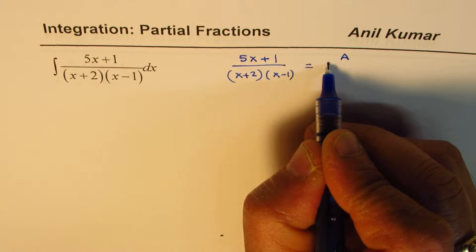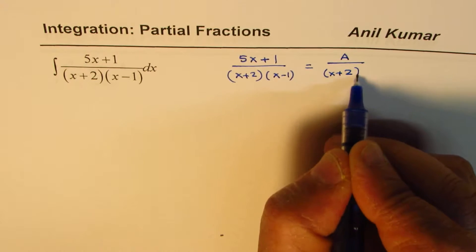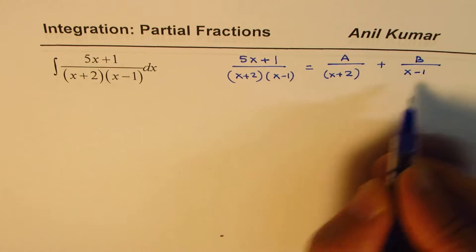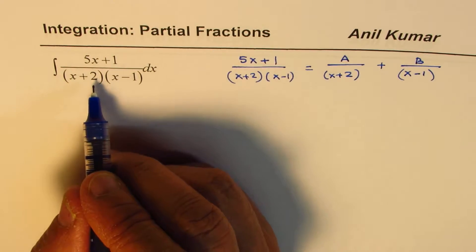That is to say, as sum of two fractions, a over one of these factors which is x plus 2, plus b over the other factor which is x minus 1. So that is how we need to write this rational function.